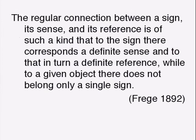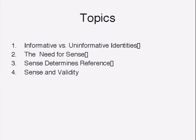The key thing is to figure out how sense operates. The regular connection between the sign, the sense, and its reference is such that to a given sign there corresponds a definite sense, and to that sense a definite reference — while a single object can have more than one sign. So the sign should, in any one context, be expressing a particular sense — just one sense — and that sense is hooking up the sign to the object. We will follow up into a theory of sense next time.